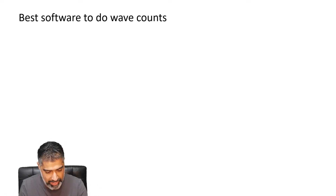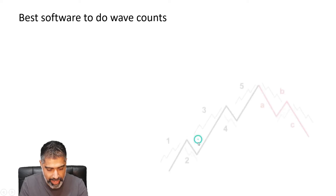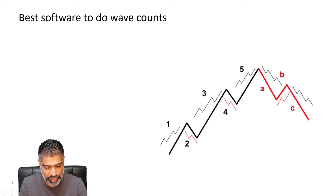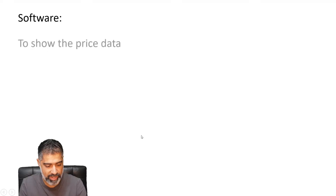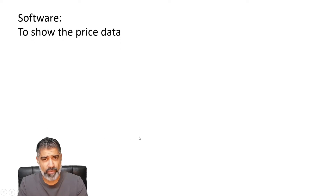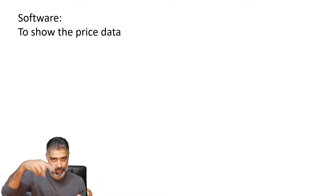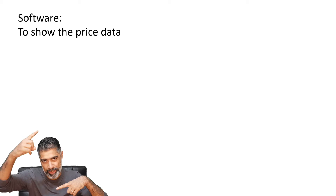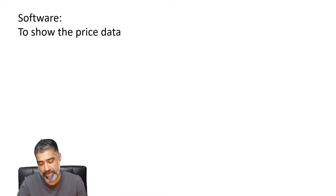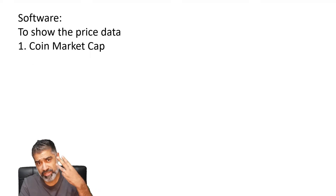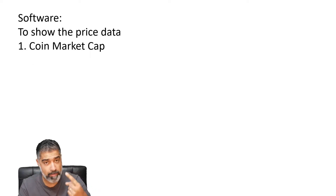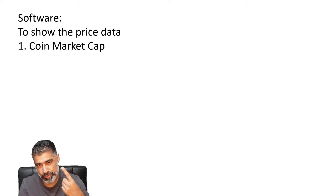Let's dive into the software. Why software? Well, we need price data and chart patterns — you've seen charts with lines showing Bitcoin going up or down. That's what I mean by software and price data. The first piece of software we're going to look at is CoinMarketCap — it's free, and we're going to use it for many things.